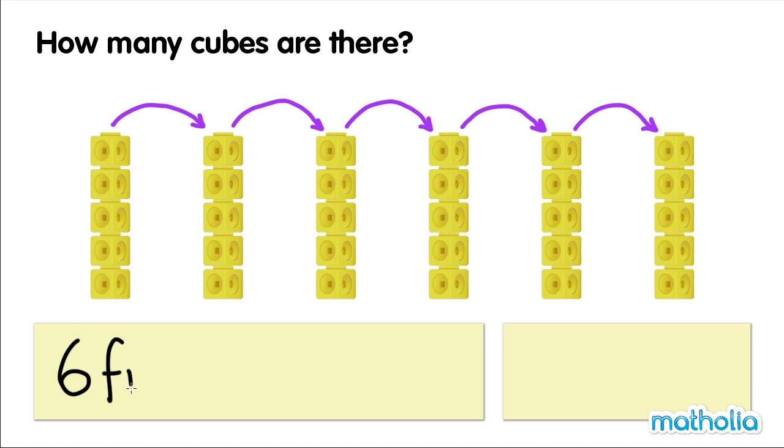Six fives equals thirty. Six times five equals thirty.